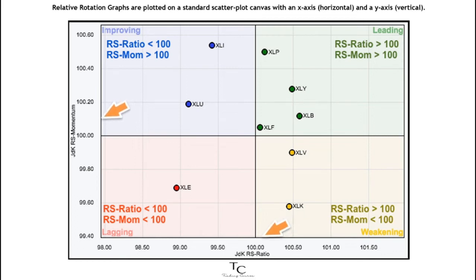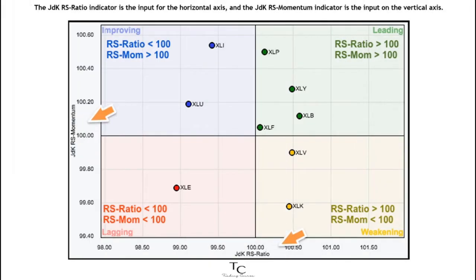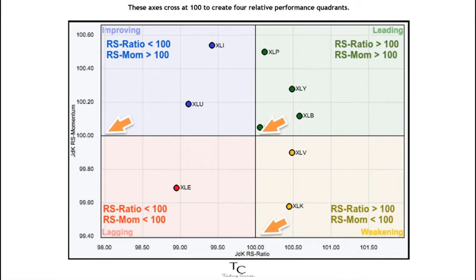Relative rotation graphs are plotted on a standard scatter plot canvas with an x-axis (horizontal) and a y-axis (vertical). The JDK RS ratio indicator is the input for the horizontal axis, and the JDK RS momentum indicator is the input on the vertical axis. These axes cross at 100 to create four relative performance quadrants.